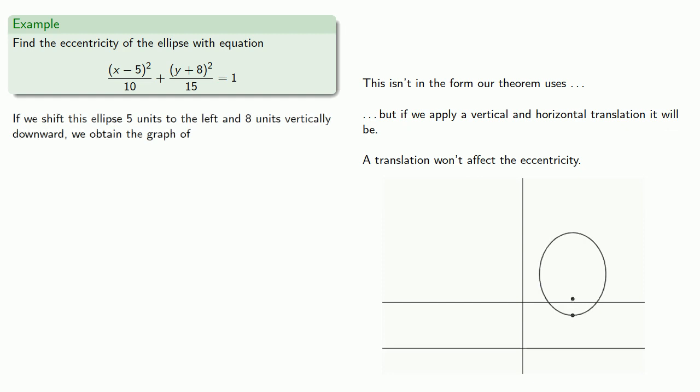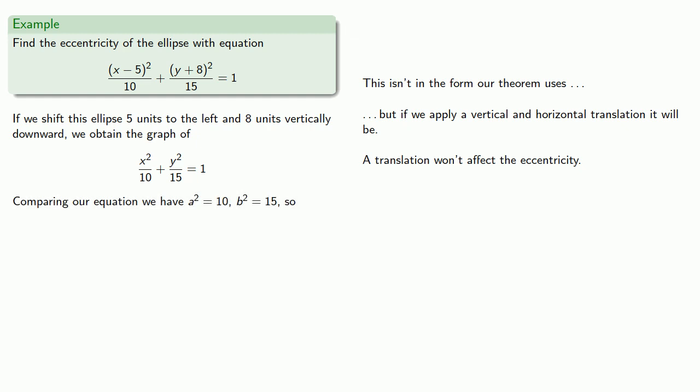So if we shift this ellipse 5 units to the left and 8 units downward, we get the graph of the transformed equation. And again, comparing our equation to that in our theorem, we have a² equals 10, b² equals 15, and so our eccentricity will be calculated accordingly.